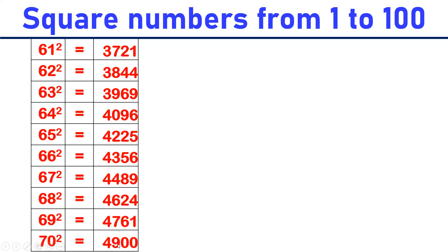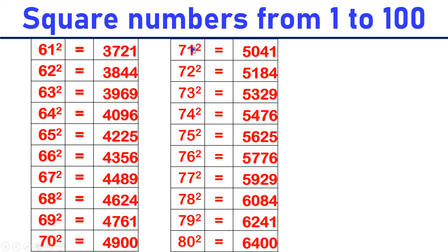71 square is equal to 5,041. 72 square is equal to 5,184. 73 square is equal to 5,929. 74 square is equal to 5,476.